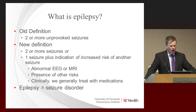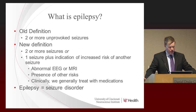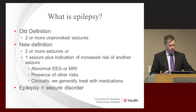We used to think epilepsy was defined as two or more seizures, and that would lead to the diagnosis of epilepsy. However, within the past year there's been a new definition of epilepsy. The definition still includes having two or more seizures, but the second component is if you have one seizure and there is an indication of an increased risk for other seizures — that could include an EEG that is abnormal or an MRI that is abnormal.